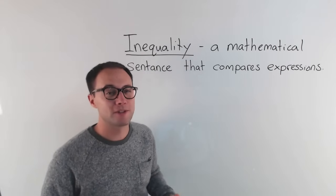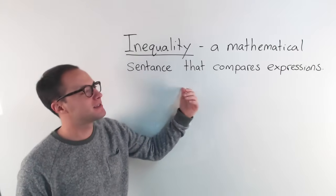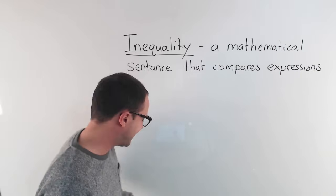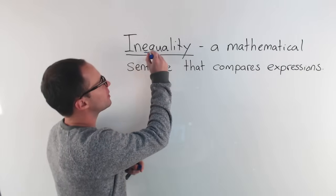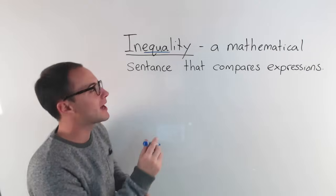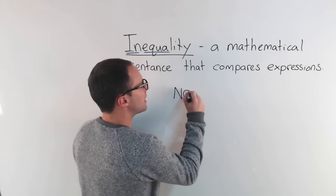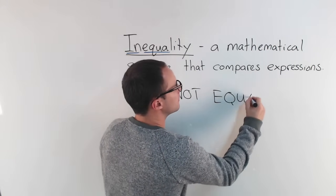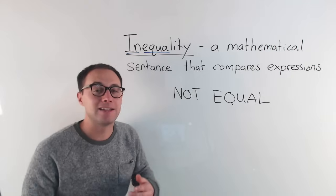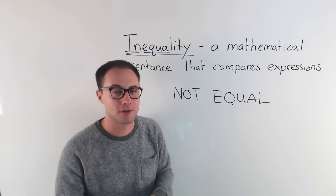Before we get to examples, let's talk about what exactly is an inequality. An inequality is just a mathematical sentence that compares expressions. If you look at the word inequality, you'll see 'equal' in there, just like an equation. But before that you see the prefix 'in', and the prefix 'in' means 'not'. So an inequality is not equal — it's not an equation and does not have an equal sign in it.